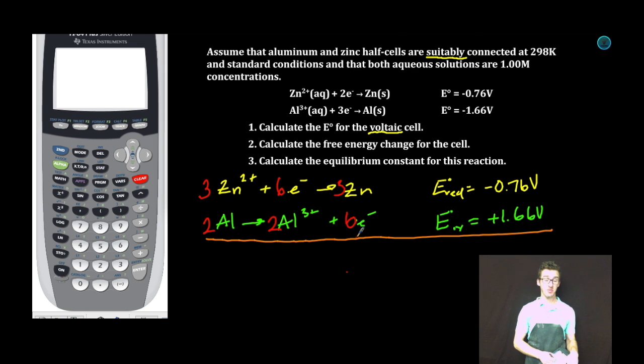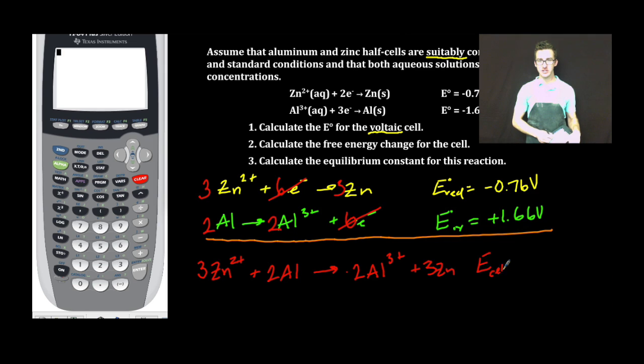Now we're gaining and losing the same number of electrons. Keep in mind that I'm not multiplying my potentials. When I combine the equation, I'll cancel out my electrons. We end up with this for our overall reaction for the voltaic cell. The cell potential for this reaction should be positive if we've done it correctly.